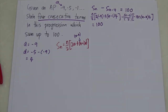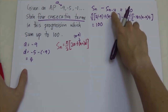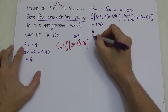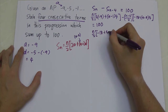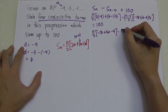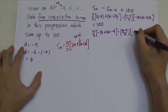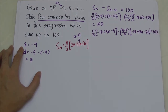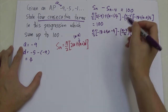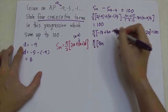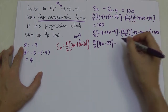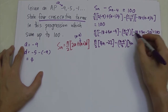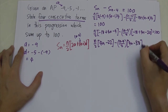Now we solve the algebra. The first part expands to: N over 2 times (4N minus 4 minus 18), which simplifies to N over 2 times (4N minus 22). The second part becomes: (N minus 4) over 2 times (4N minus 20 minus 18), which is (N minus 4) over 2 times (4N minus 38). Set the whole expression equal to 100.